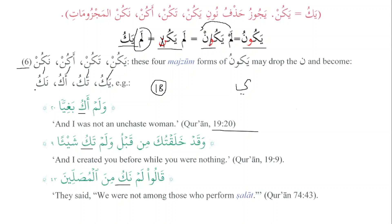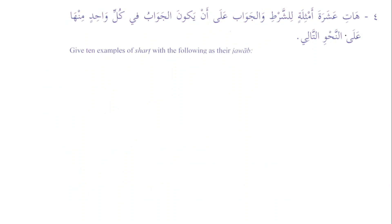Exercise number four: we have to give 10 examples for the condition and the answer to the condition. The answer in every condition has to be according to the situations given. We know that hati is fa'il al-amr, and because of that ashrata is mansoob and amthilatin is majroor — because numbers from 3 to 10 are used as mudaf, so ashrata is mudaf and amthilatin is mudaf ilayh.